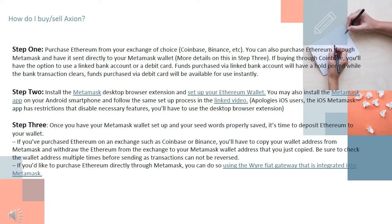Step 2: Install the Metamask desktop browser extension and set up your Ethereum wallet. You may also install the Metamask app on your Android smartphone and follow the same setup process in the linked video. Apologies to iOS users — the iOS Metamask app has restrictions that disable necessary features, so you'll have to use the desktop browser extension.